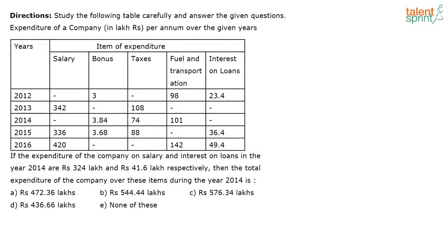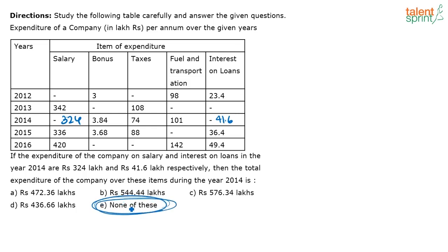If the expenditure of the company on salary and interest on loans in the year 2014 are Rs. 324 lakhs and 41.6 lakhs respectively, then the total expenditure of the company over these items during 2014 is what? In 2014, salary is 324 and interest on loans is 41.6. You have to add all the terms. The options are fairly spaced, but remember there is a 'none of these' option, so you will have to find the exact answer.